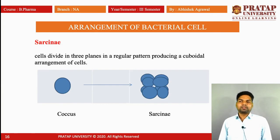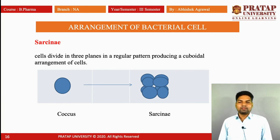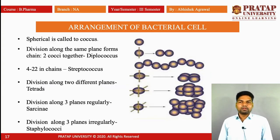Last is sarcinae. The cell divides in three planes in a regular pattern, producing a cuboidal arrangement of cells. The cocci form a cuboidal arrangement like a cube; this is called sarcinae.